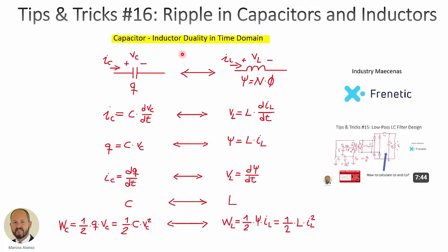Firstly, we are going to see clearly the duality that we have when working with capacitors and inductors. Here we have a capacitor — we have the voltage across the capacitor, the current through the capacitor, and another very important parameter: the charge stored in the capacitor.